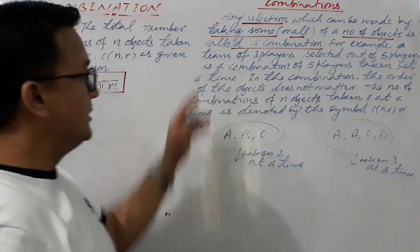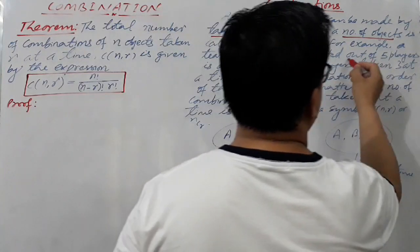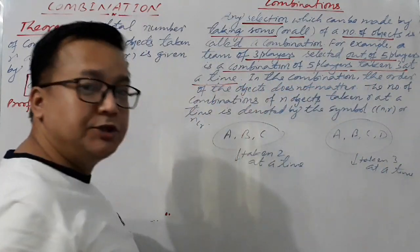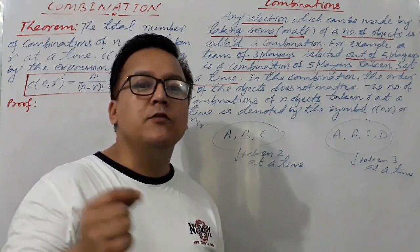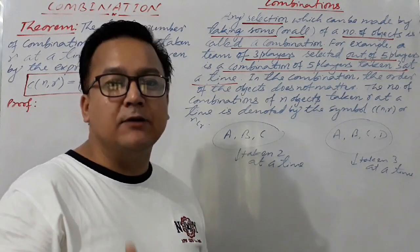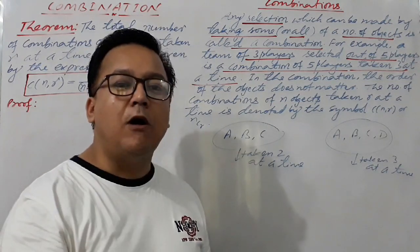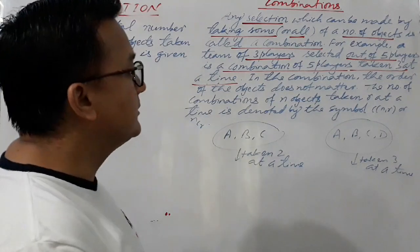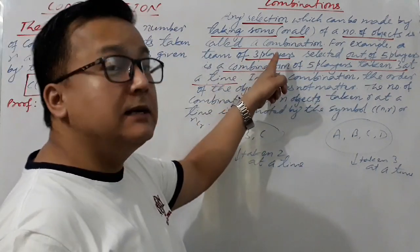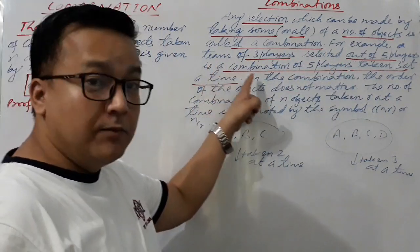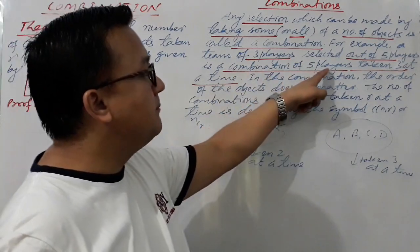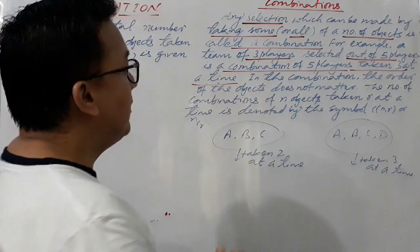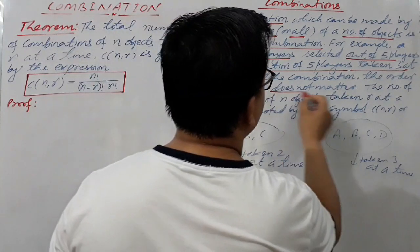An example: a team of three players selected out of five players is a combination of five players taken three at a time. If we have 10 players and we want to make a team of six players, then in the language of combination, we say: combination of 10 players taken six at a time. The order of objects does not matter — this is the key difference between permutations and combinations.